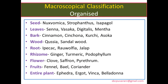Macroscopical classification: macroscopic means physical objects that can be seen by the naked eye. It is further classified into organized and unorganized. Organized means directly obtained from plant parts. Examples include seeds like nux vomica and strophanthus; bark: cinnamon and cinchona; wood: quassia, sandalwood; root: ipecac; rhizome: ginger; flower: saffron; fruit: fennel, coriander; entire plants: vinca, ergot, ephedra.